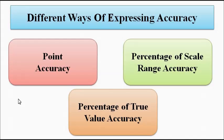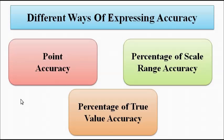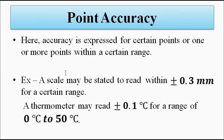Now coming to the main topic: there are different ways of expressing the accuracy of measurement. Whenever you purchase an instrument, in the specification sheet there will be a particular section in which the accuracy performance characteristic will be specified, along with the way in which accuracy is being expressed. There are three ways: point accuracy, percentage of scale range accuracy, or percentage of true value accuracy.